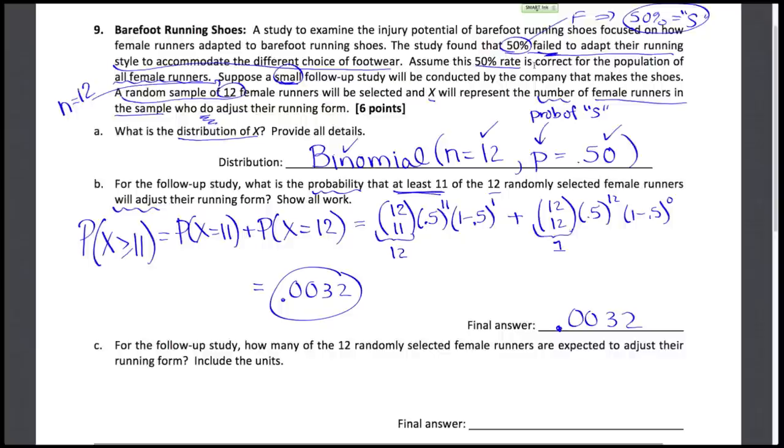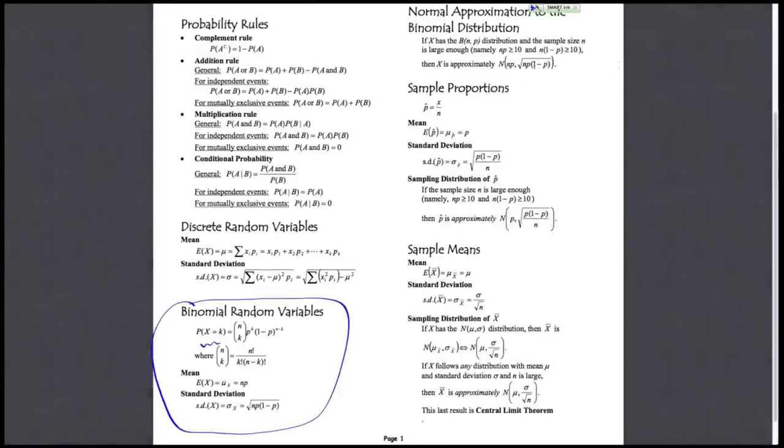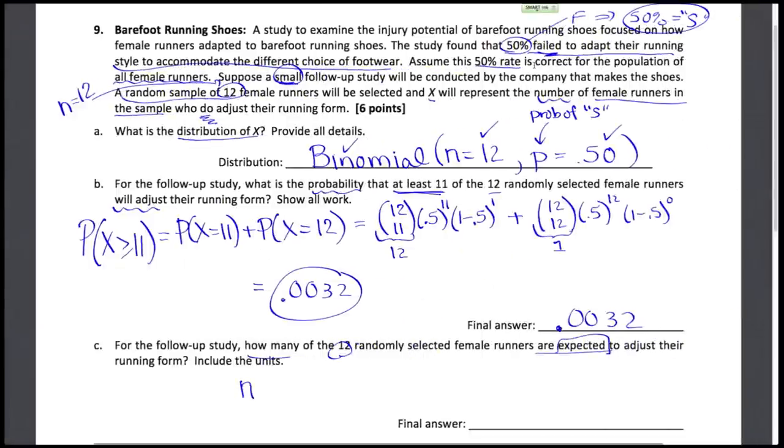Finally we're asked to give a little bit more of what we would have expected to see. How many of the 12 are expected to adjust the running form? That word expected means expected value. For a binomial random variable the mean, also known as the expected value, is just n times p. We would expect out of the 12 about half, so about 50% of 12, which turns out to be exactly 6. This is our expected value for X, sometimes also represented as being the mean. We would expect 6 female runners or 6 women.